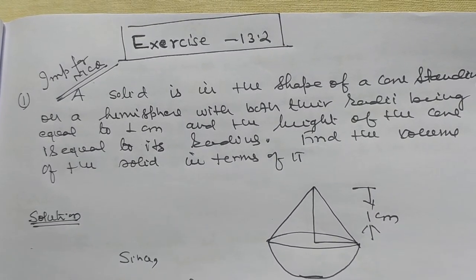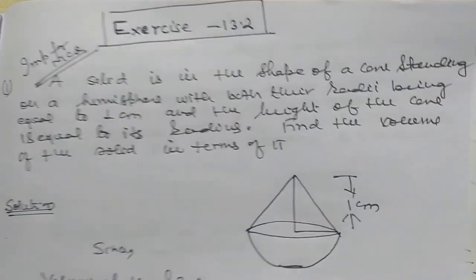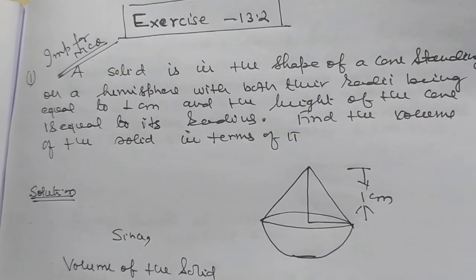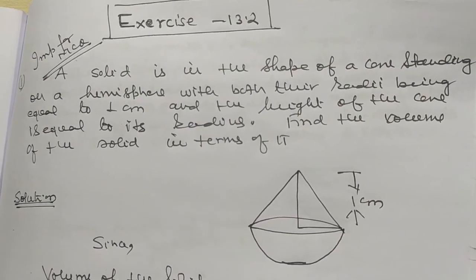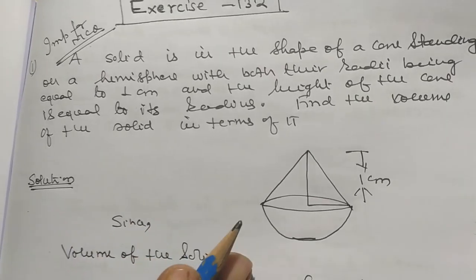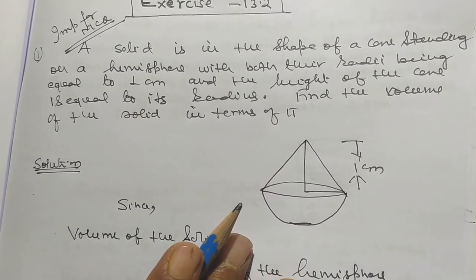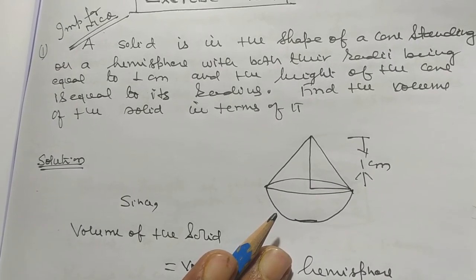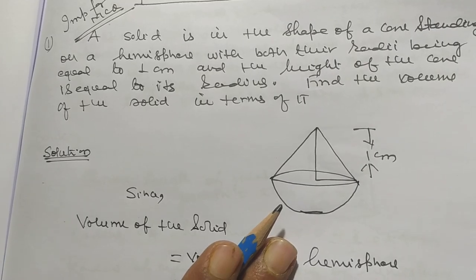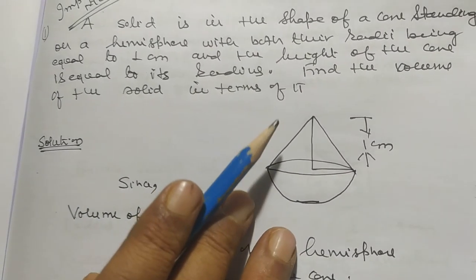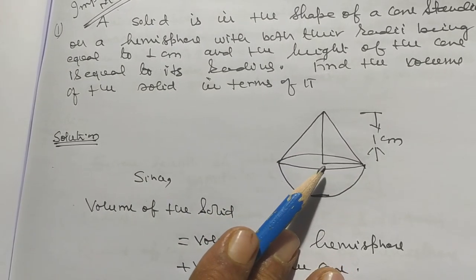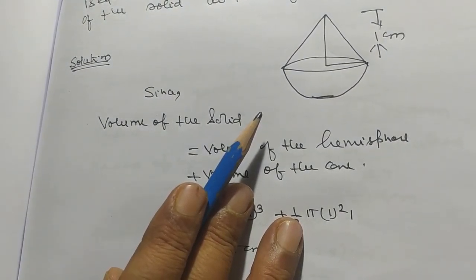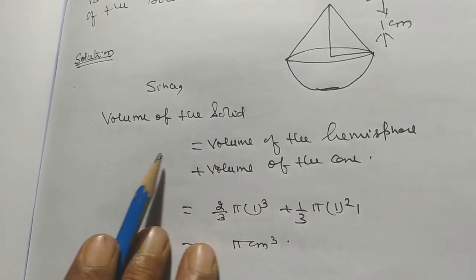My dear students, now I want to discuss problems of Exercise 13.2. A solid in the shape of a cone standing on a hemisphere, with both their radii being equal to one centimeter, and the height of the cone is equal to its radius. Find the volume of the solid in terms of pi. This question is very important for the purpose of examination.